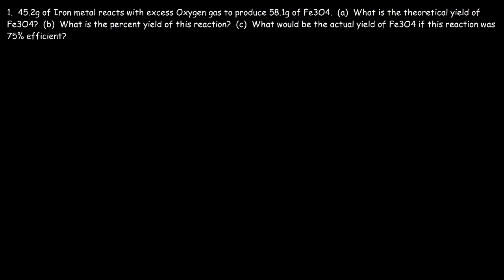In this video we're going to talk about how to calculate the theoretical yield and the percent yield. Here's a question that we can start with: 45.2 grams of iron metal reacts with excess oxygen gas to produce 58.1 grams of iron oxide, Fe3O4. What is the theoretical yield of Fe3O4?